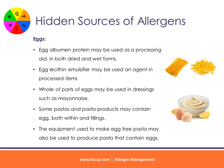Eggs: egg albumin protein may be used as a processing aid in both dried and wet forms. Egg lecithin emulsifier may be used as an additive in processed items. Whole or parts of eggs may be used in dressings such as mayonnaise. Some pastas and pasta products may contain egg, both within the pasta and fillings. The equipment used to make egg-free pasta may also be used to produce pasta that contains egg.